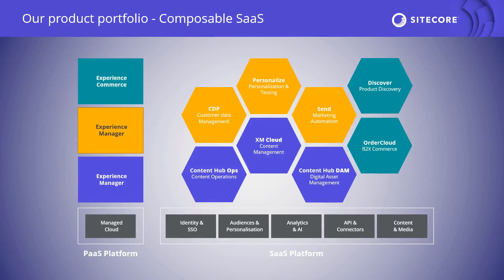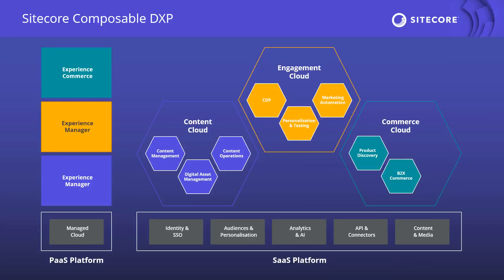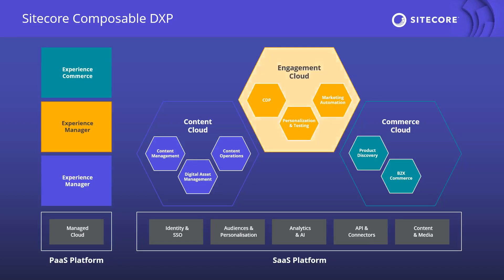As usual, we start with a quick reminder on the composable architecture of Sitecore's product portfolio. We have Content Cloud, Commerce Cloud, and the Engagement Cloud where Sitecore CDP and Personalize live. Most features we talked about in past sessions can be found in either Sitecore Personalize only, or Sitecore Personalize and CDP together. However, you need Sitecore CDP to run batch segmentation — users with a Personalize-only subscription will not have access to batch segmentation features.